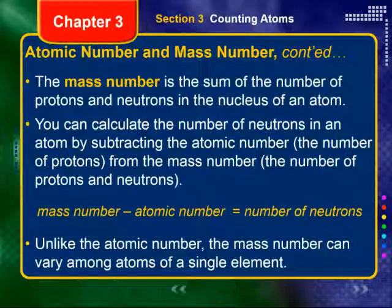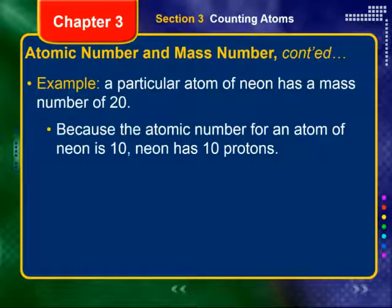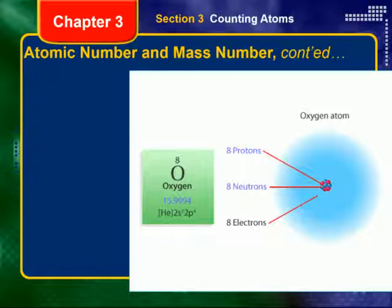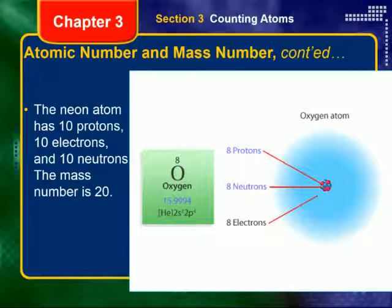Unlike the atomic number, the mass number can vary among atoms of a single element. For example, a particular atom of neon has a mass number of 20. Because the atomic number for neon is 10, neon has 10 protons. If I take the total protons and neutrons, which is 20, and subtract the number of protons, which is 10, I find the number of neutrons, which is also 10. And looking back at the oxygen atom here — it has 8 protons and 8 electrons, and also 8 neutrons, because the mass number on the periodic table is 16.